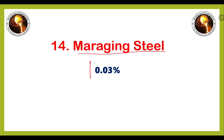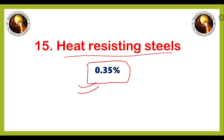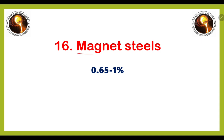Next is maraging steel, in which the carbon percentage is 0.03 percent. The next one is heat resisting steel, in which the carbon percentage is 0.35 percent. The next one is magnet steel, which has a carbon percentage from 0.65 to 1.0 percent, so it falls under high carbon steel.